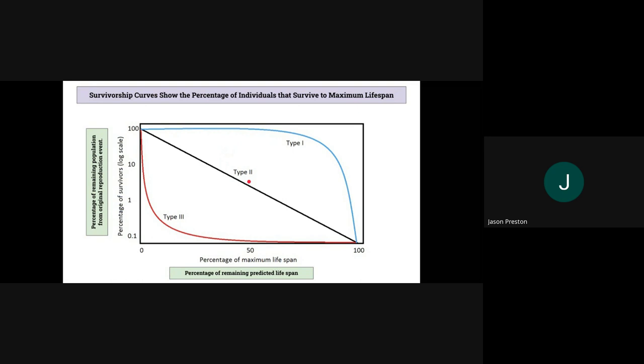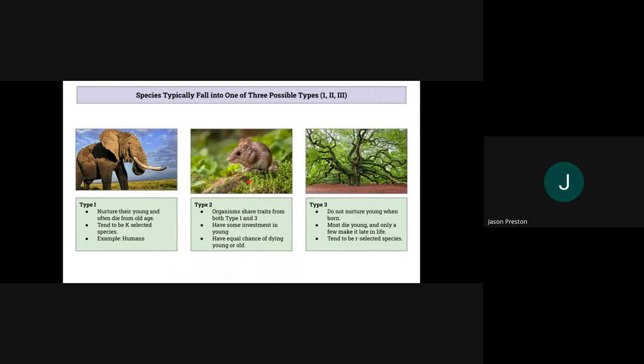So what are some characteristics of Type 1, 2, and 3 organisms? Well, Type 1 nurture their young and they often die from old age. K-selected species tend to be Type 1. An example would be humans or elephants.